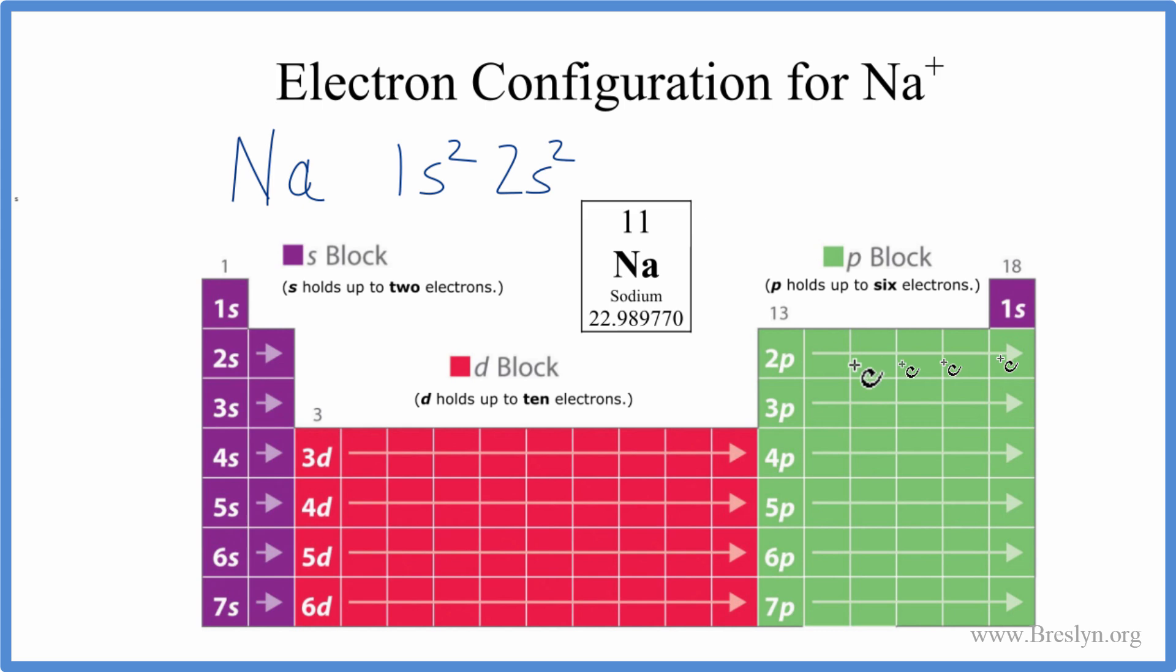Then we go over to the p. p holds up to 6. So we'll put 6 in there for the 2p. It gives us 2p⁶. We have 10 electrons. We need 11. So we go over here from 2p to 3s and just 3s¹ here. That'll give us 11 electrons. So that's the electron configuration for sodium.